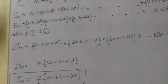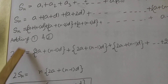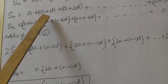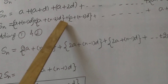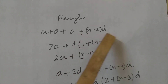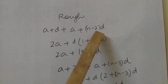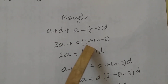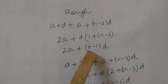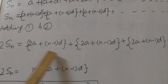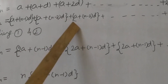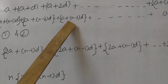Now students, let us add Equation 1 and Equation 2. SN plus SN gives 2SN. Adding A and A plus (N-1)D gives 2A plus (N-1)D. Adding A plus D and A plus (N-2)D: taking D common, we get 1 plus (N-2) which equals N-1, so the sum is 2A plus (N-1)D. Similarly, adding A plus 2D and A plus (N-3)D: taking D common gives 2 plus (N-3) equals N-1, so again 2A plus (N-1)D.